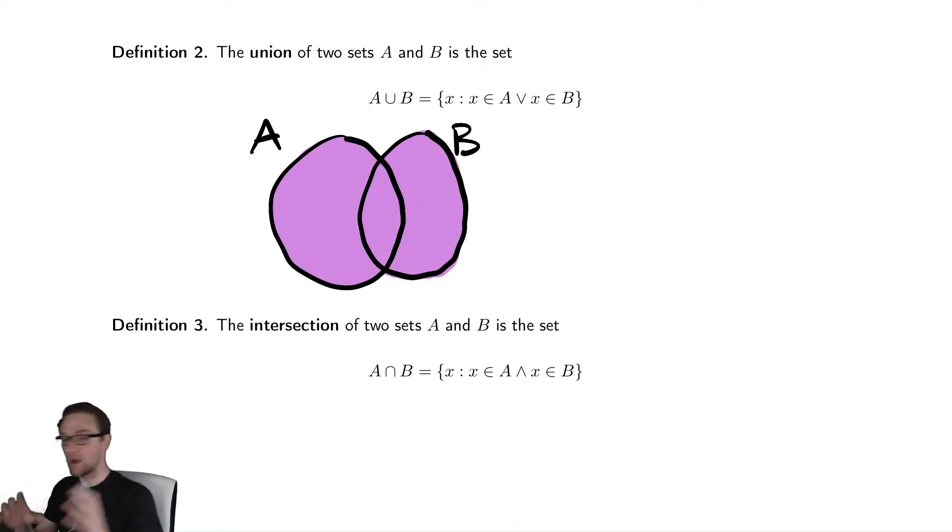So the union is everything that's in A, everything that's in B, and everything that is in both A and in B.